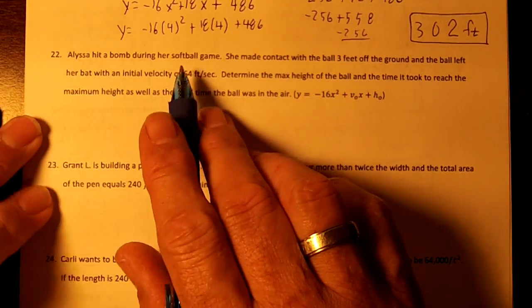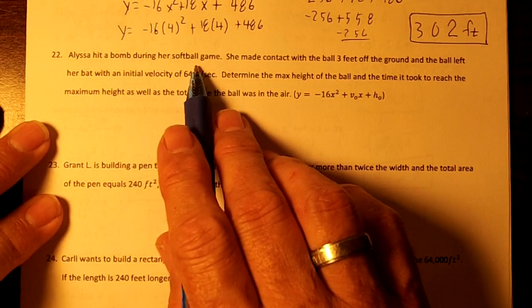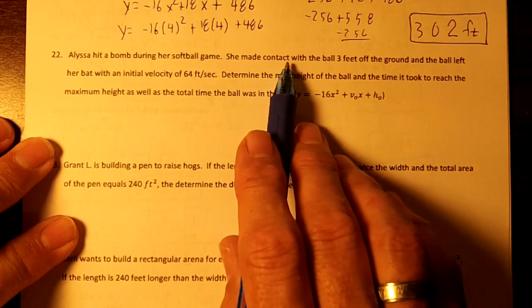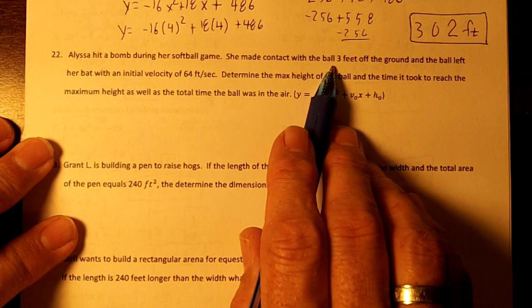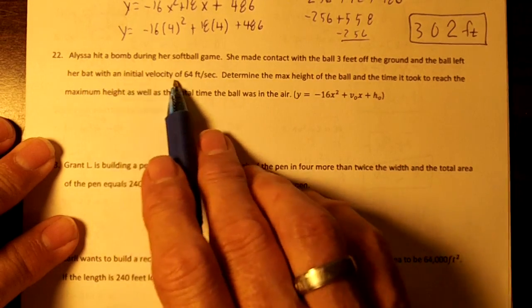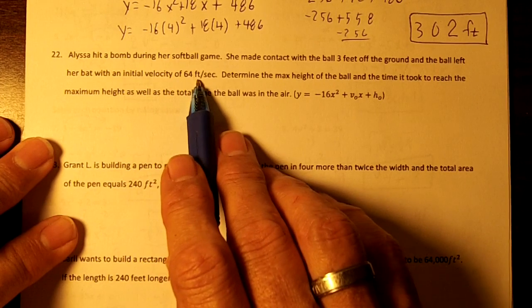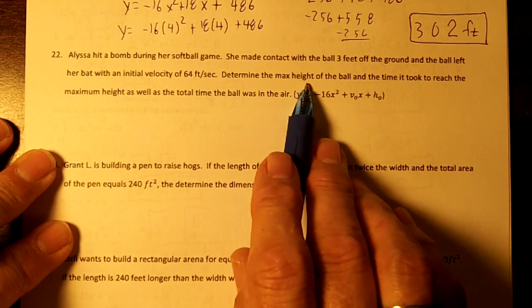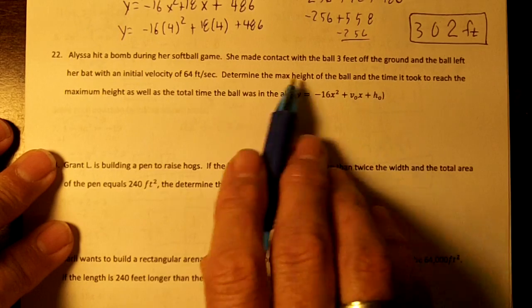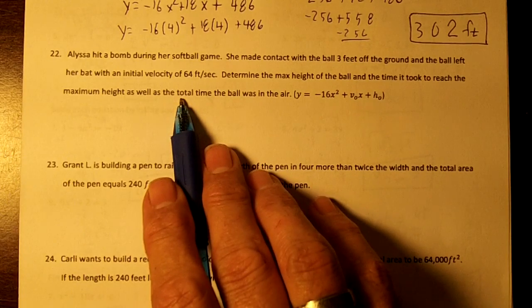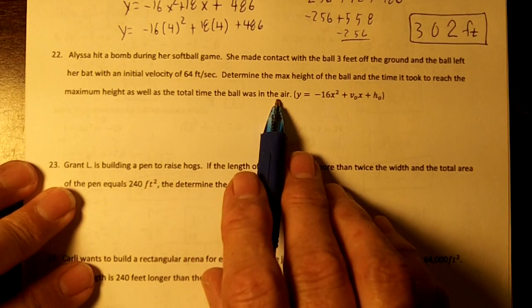Number 22. Alyssa hit a bomb during her softball game. She made contact with the ball three feet above the ground, and the ball left her bat with an initial velocity of 64 feet per second. Determine the maximum height of the ball and the time it took to reach the maximum height, as well as the total time the ball was in the air.